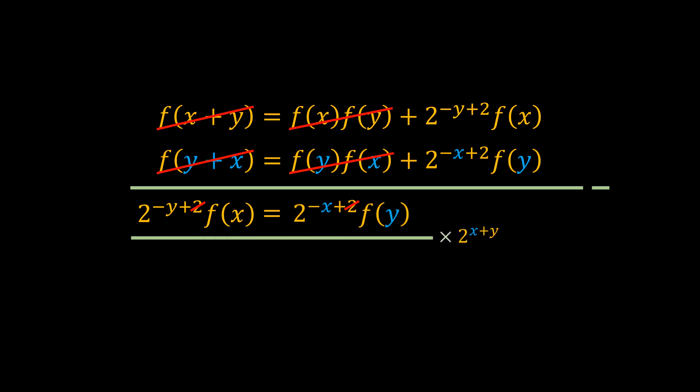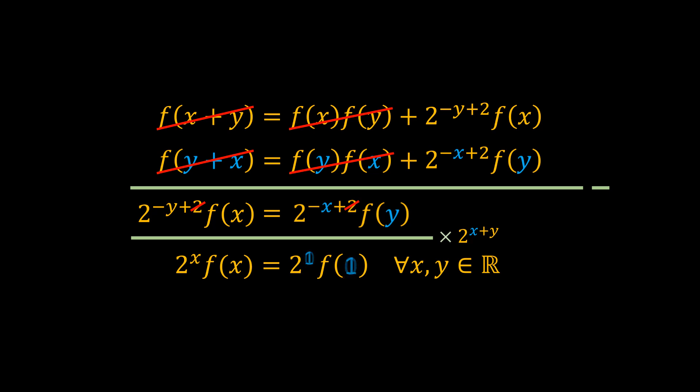We get that 2^x·f(x) equals 2^y·f(y). As we can see, this equation holds for any real numbers x and y, so we can replace y with 0, 1, or any other number. Any choice of y gives us 2^x·f(x) equal to a constant.